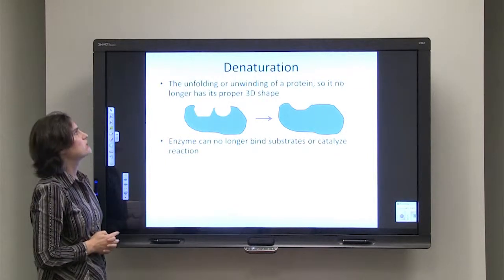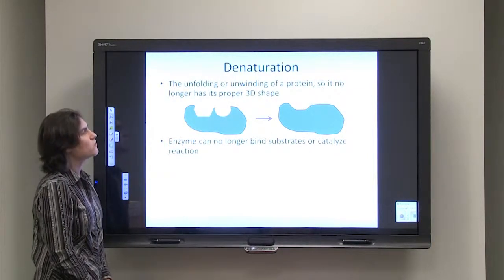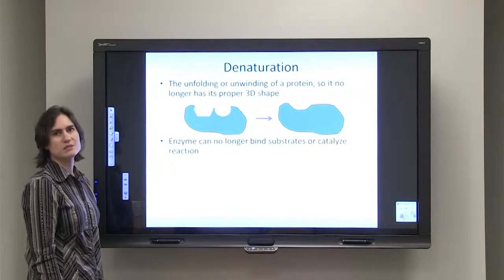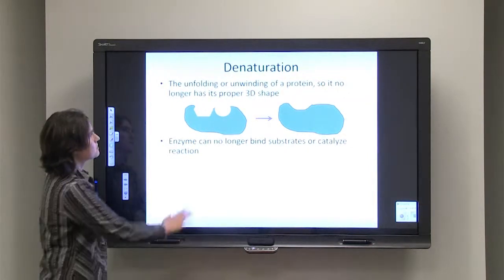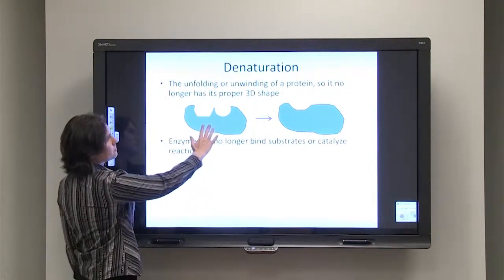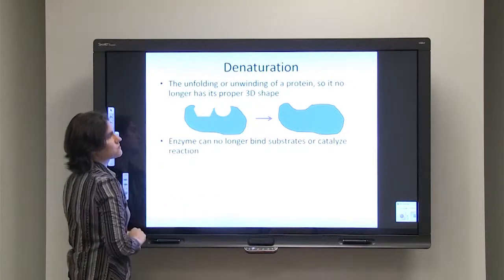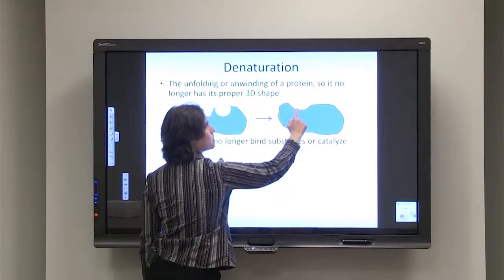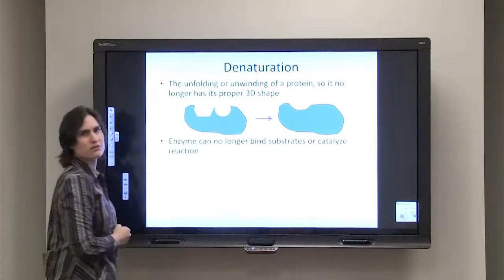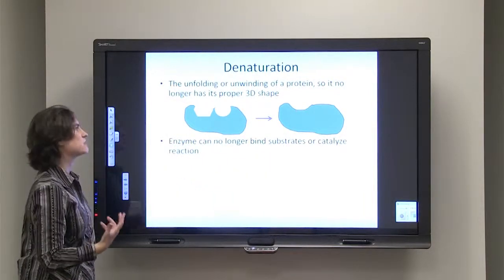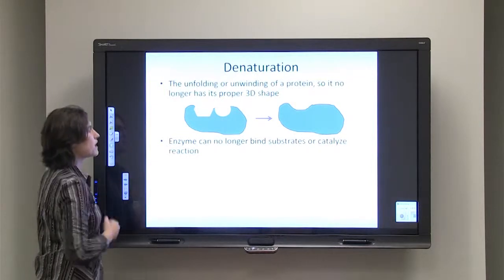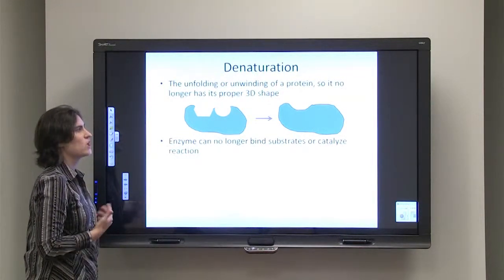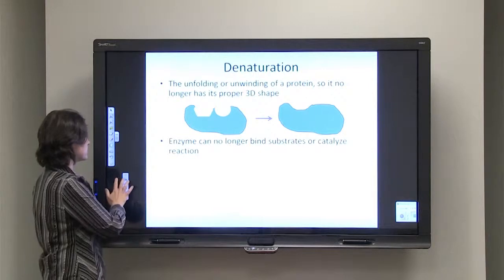Denaturation is the unfolding or unwinding of a protein so it no longer has its proper three-dimensional shape. For our enzyme, it needs that shape to bind the two substrates. If it's denatured or unfolded, it can no longer bind those substrates — it has a different shape — and so it can no longer catalyze that particular reaction.